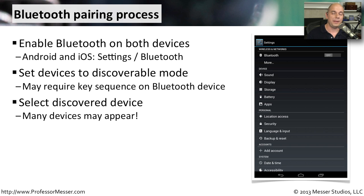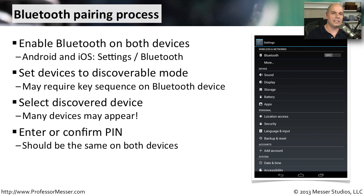If there are a lot of different people around you and a lot of different devices, you may see a lot of things suddenly appear on your screen. You then want to select the correct device that you'd like to pair with. Make sure you choose the right one, because you'll need to confirm this on both your mobile device and the Bluetooth device. At this point, you're going to be presented with a confirmation, which may be something like a personal identification number or a PIN. There may be a PIN already defined on that Bluetooth device, and it's going to show you that PIN on your mobile phone so you can make sure you're pairing the right devices.